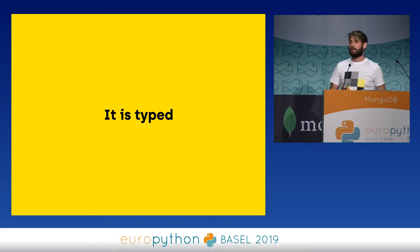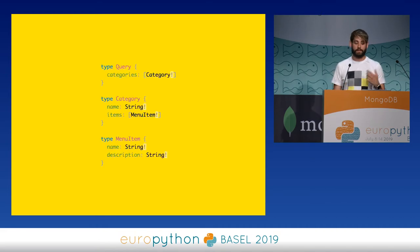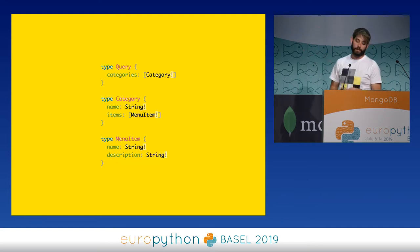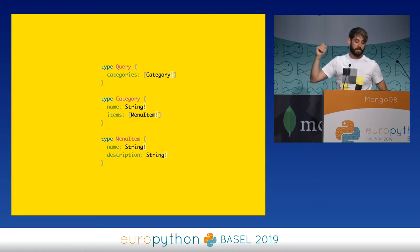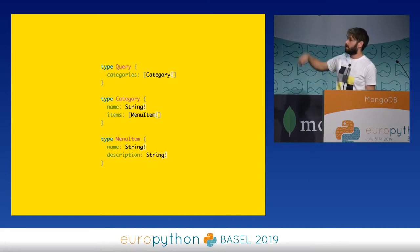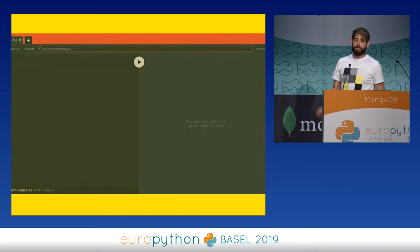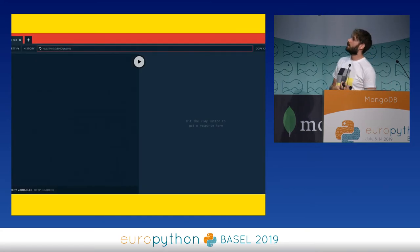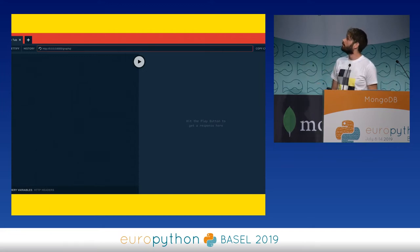GraphQL also has types. A GraphQL API has a schema, and the schema lists all the types you have and all the fields for each type. For example, we have a type Query which is the root of our API — all fields come from the root query. In this case we have 'categories' which is a list of categories. Then we have type Category which has a name and a list of menu items. Then MenuItem has only a name and a description. Having all this together allows you to use tools to easily access documentation and do testing.